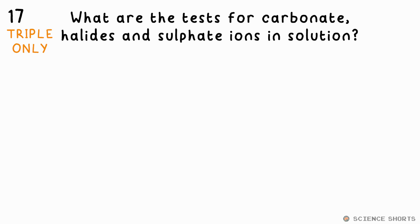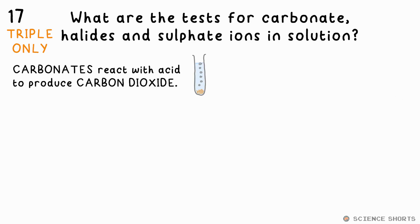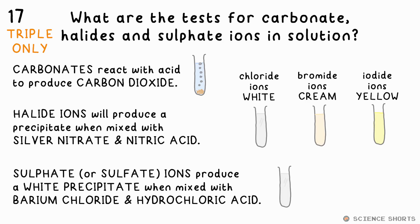Question 17. How do you test for carbonates, halides, and sulphates in solution? Carbonates react with acid to produce carbon dioxide. To test for halide ions, add silver nitrate and nitric acid — they'll form coloured precipitates: chloride white, bromide cream, iodide yellow. Sulfate ions will cause a white precipitate to form when mixed with barium chloride and hydrochloric acid.